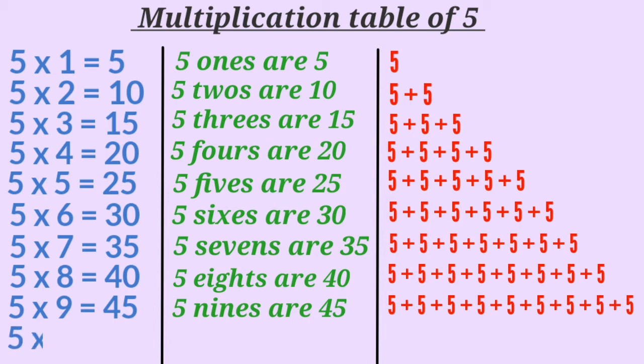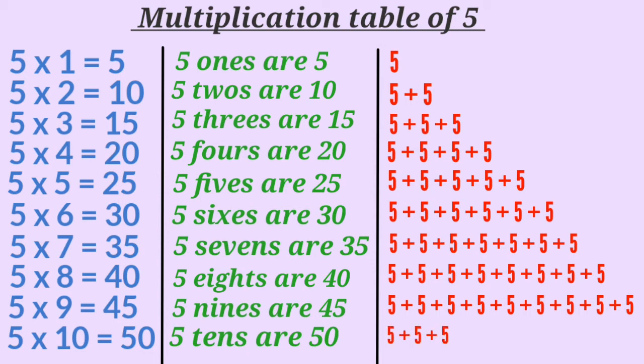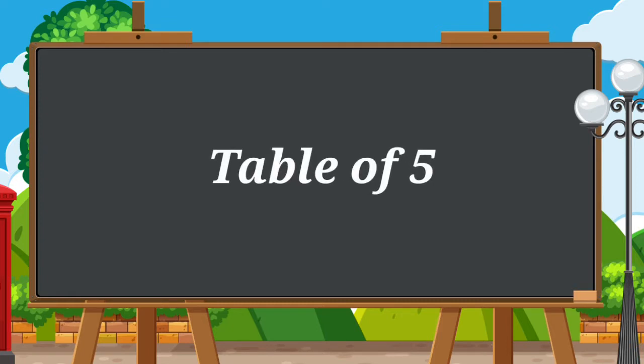5 multiplied by 10 is 50, or 5 tens are 50. Here we are adding number 5 ten times. Now, children, let's all sing the table of 5.